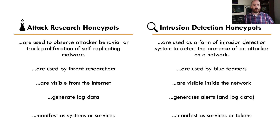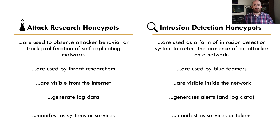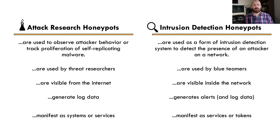That's not the type of honeypot we're here to talk about today. We're going to talk about an intrusion detection honeypot, which certainly has all the same four characteristics, but they manifest in very different ways. An intrusion detection honeypot is basically a form of intrusion detection system — just like Suricata is signature-based IDS, and we have anomaly-based IDS, an IDH is another form of that. It's generally going to be used by a blue teamer doing detection engineering and alert investigation.